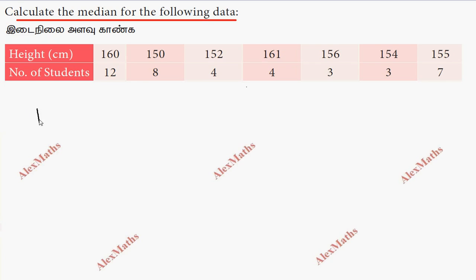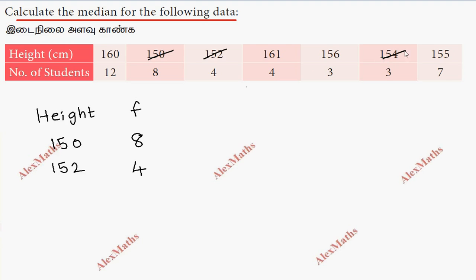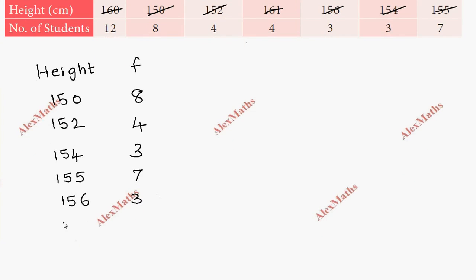In the table, the height values are arranged in ascending order. The heights are: 150, 152, 154, 155, 156, 160. The corresponding frequencies are: 8, 4, 3, 1, 7, 3, 1, and so on, filling out the frequency column.